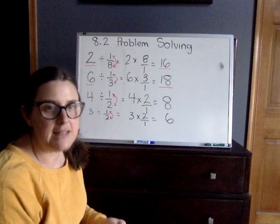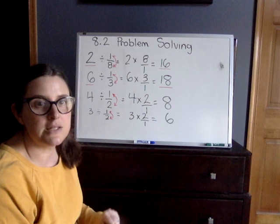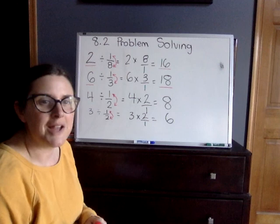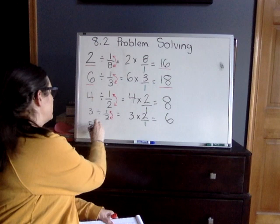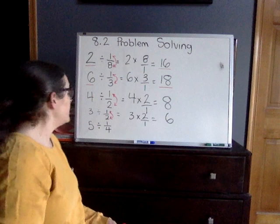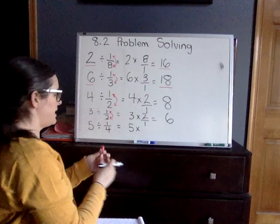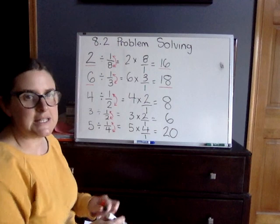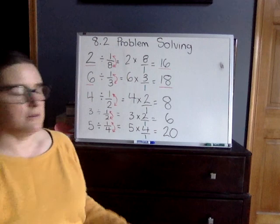Finally, your last one, number six: a landscaper had five tons of rock to build decorative walls. He used one-fourth ton of rock for each wall. How many decorative walls did he build? So we have 5 to start—that's our whole number—divided by 1/4. We're going to multiply, flip our fraction—the 1/4 becomes 4/1—and our final answer is 20. That would be 20 walls that he built.